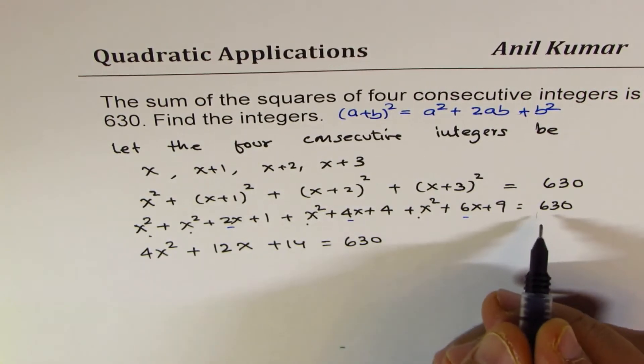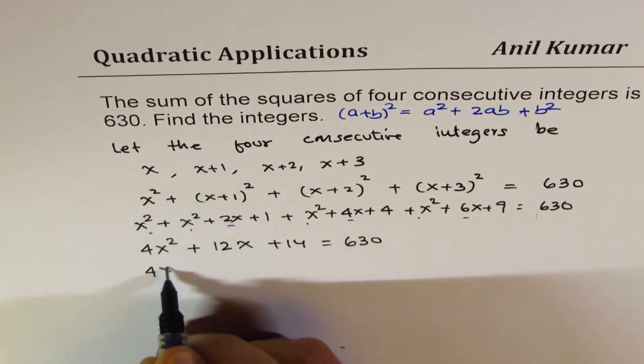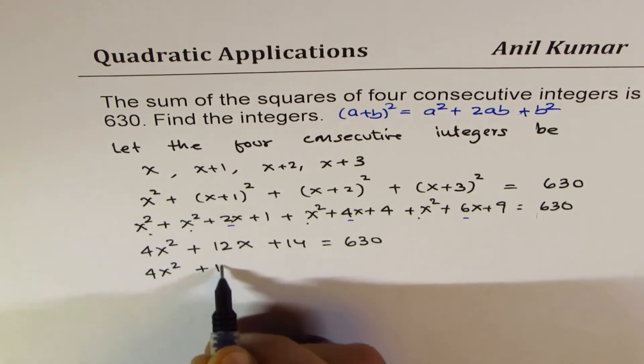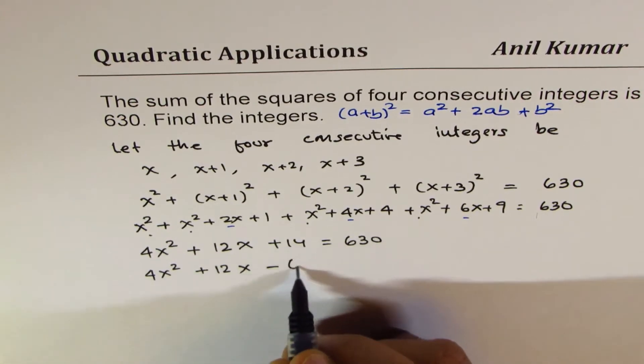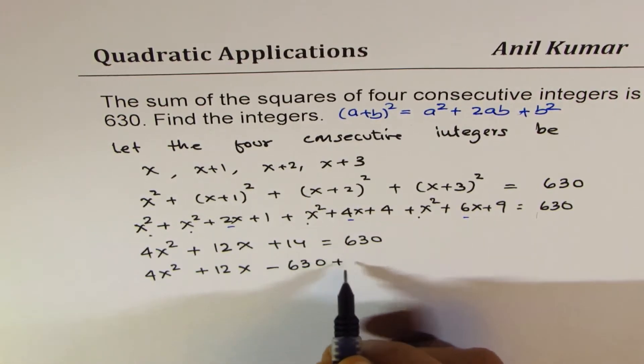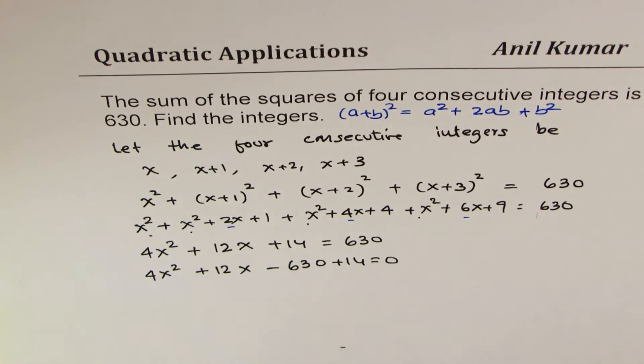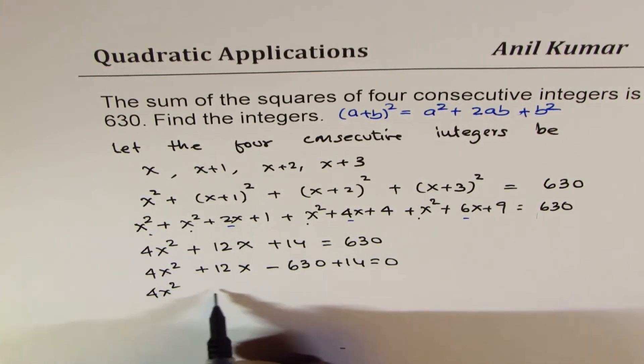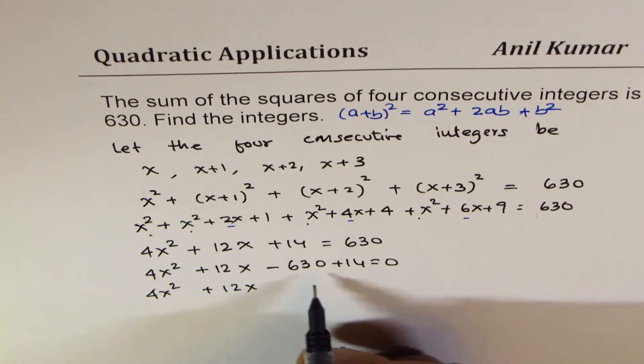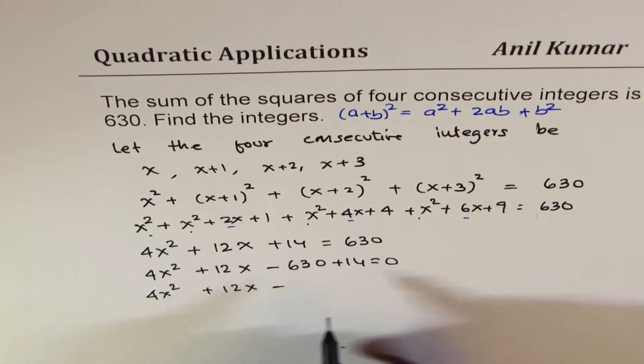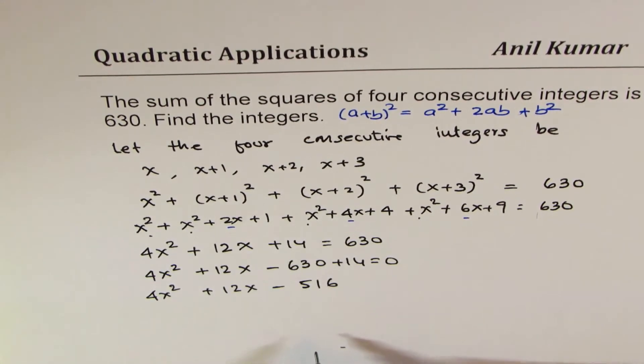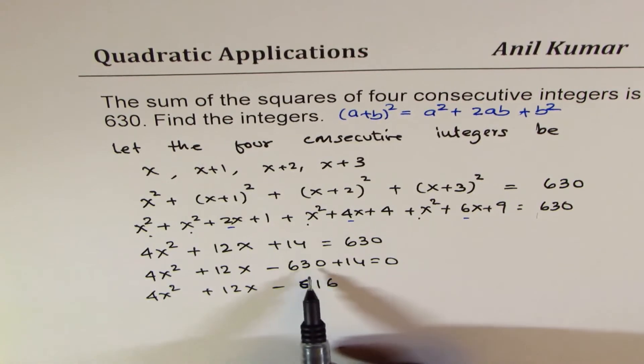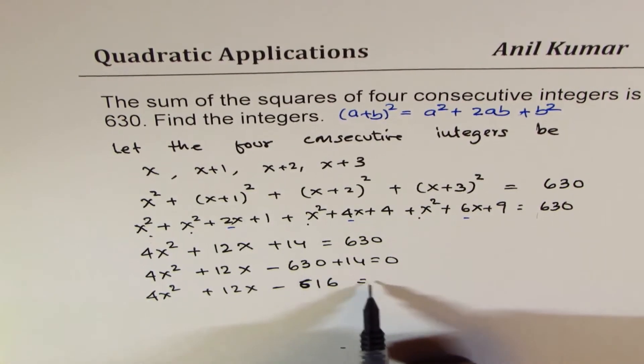Bringing 630 to the left side, we get 4x square plus 12x minus 630 plus 14 equals to 0. So now we can write this as 4x square plus 12x, and that gives you when you take away 14 from here, 6, 1 and 5, 1, 6, rather 616. So equals to 0.